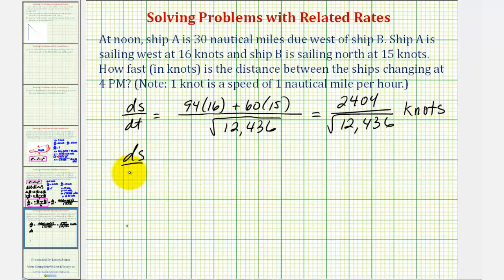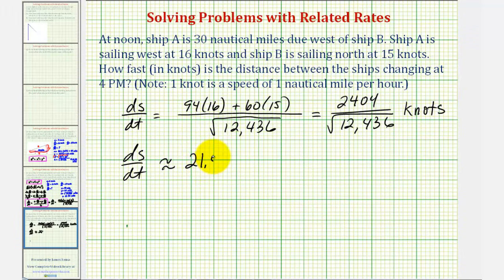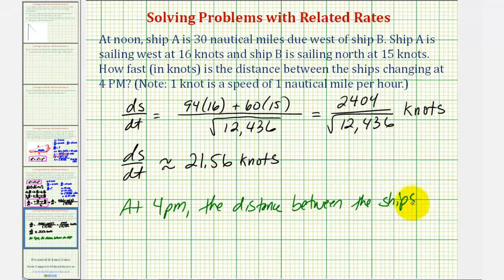dS/dt would be approximately, we can see here it would be approximately 21.56 knots. So we can say at 4 PM, the distance between the ships is changing at a rate of approximately 21.56 knots.